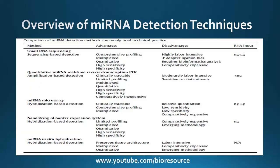The RNA input required for small RNA sequencing is in the range of nanograms to micrograms. Quantitative miRNA real-time reverse transcription PCR is an amplification-based detection method. Its advantages include multiplexing capability when using probes, quantitative results with high sensitivity and specificity, and it is comparatively inexpensive. The disadvantage is that it is labor intensive and prone to contamination. The RNA input required is very low — less than a few nanograms.